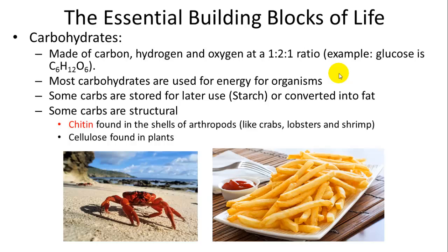Most carbohydrates found in living systems are used for energy, but they are also a very important part of structural elements. They can be used to identify cells within a body, create cell walls in plants, or — in the case of arthropods and crustaceans — they have a carbohydrate called chitin, which is found in the shells of crabs, lobsters, and other arthropods. Those shells are made of long chains of glucose packed together to make them hard and structurally supportive.